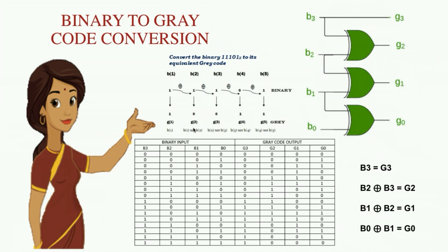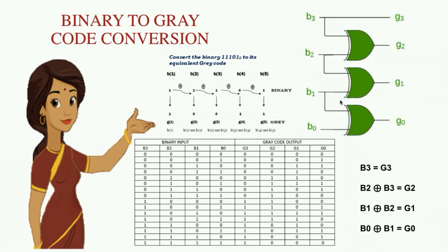The first and second binary bits are XORed to get the second gray code bit. The second and third binary bits are XORed to obtain the third gray code bit. The third and fourth binary bits are XORed to get the fourth gray code bit, and the process goes on. This is the logic diagram, truth table and the logic behind binary to gray code conversion.